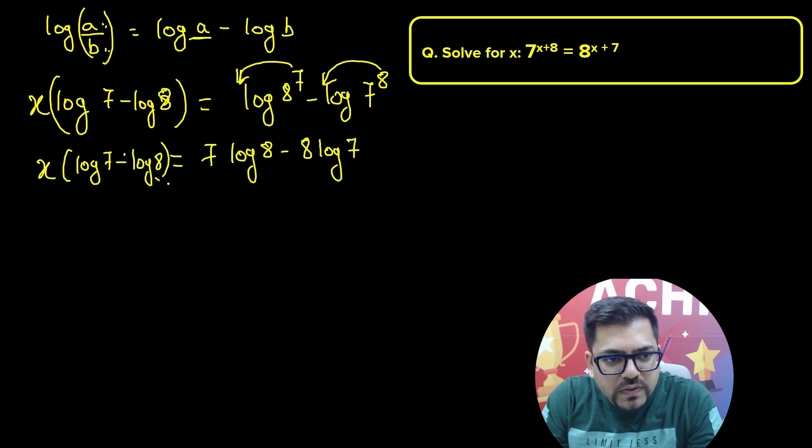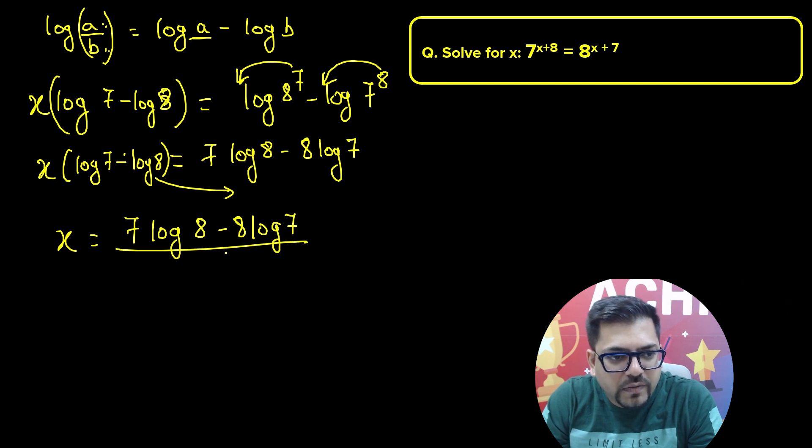So finally this will get to the denominator and we'll get x equals 7 times log 8 minus 8 times log 7, all over log 7 minus log 8. And that's the value.